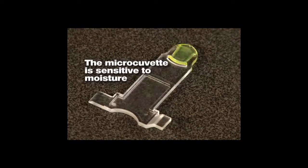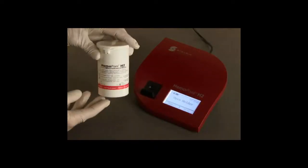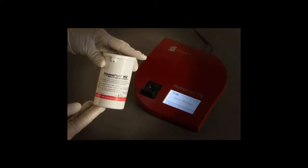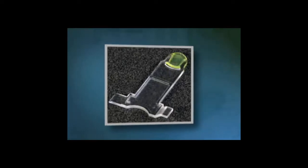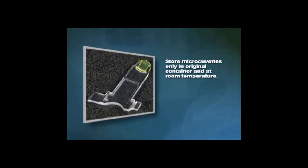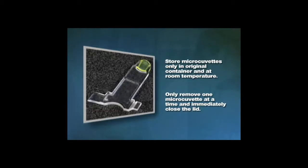To prevent the absorption of moisture, the micro-cuvettes are supplied in a special airtight container that contains a drying agent. This drying agent assures that any moisture is readily absorbed during storage. To preserve the integrity of the micro-cuvettes, please do the following: store the micro-cuvettes only in the original container and at room temperature. Only remove one micro-cuvette at a time from the container and then immediately close the lid. Make sure that the lid is completely closed by pressing it down as far as it will go.